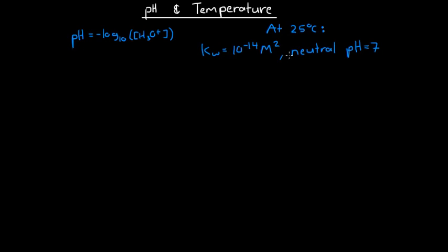Over here, we can see that at 25 degrees Celsius, the ionization constant of water is equal to 10 to the negative 14. We know that this ionization constant is equal to the concentration of hydronium multiplied by the concentration of hydroxide. Also, we know that in a neutral solution at 25 degrees Celsius, we have a pH of 7.